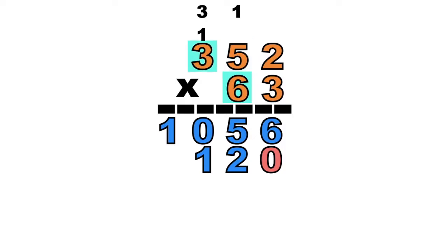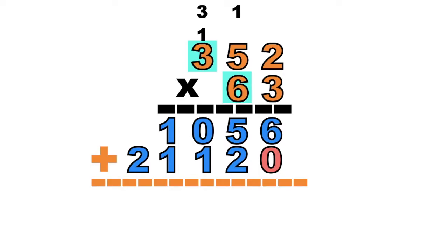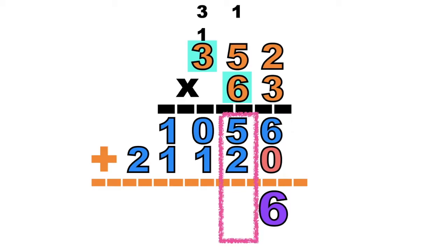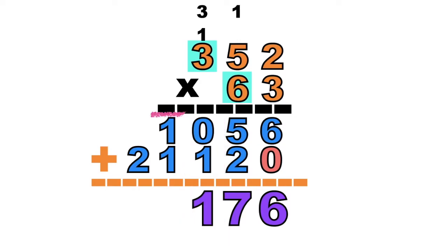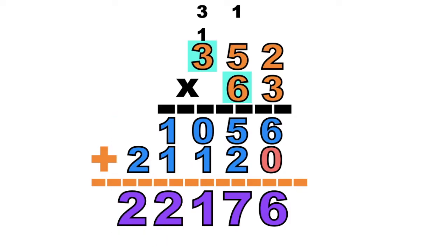Let's have 3 times 6 equals 18. Plus 3 — it's 21. So we can now add the partial products. 6 plus 0 equals 6. How about 5 plus 2? That's correct, it's 7. How about 0 plus 1? It's 1. 1 plus 1 equals 2. Then bring down 2. So the product of 352 and 63 is 22,176.